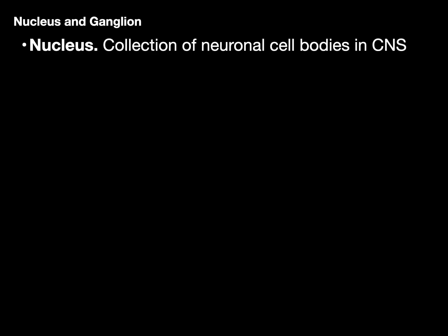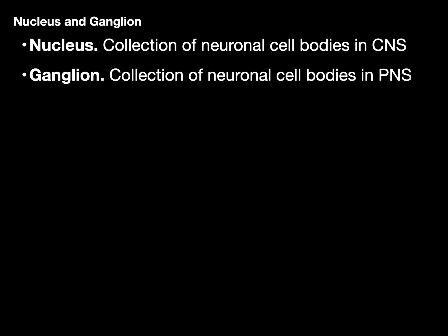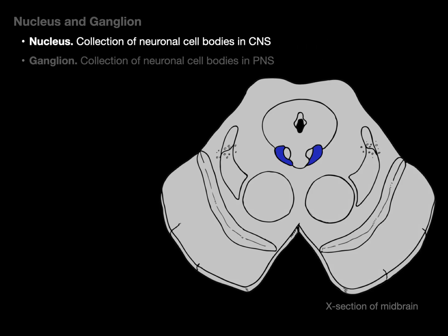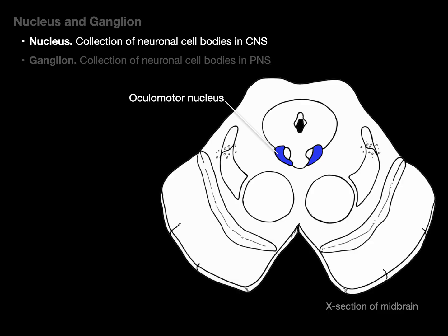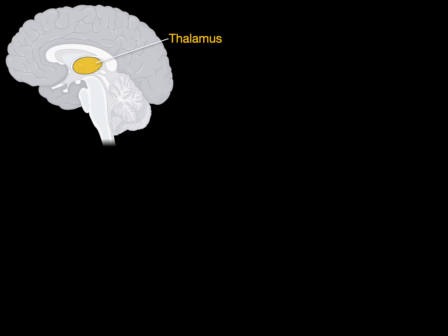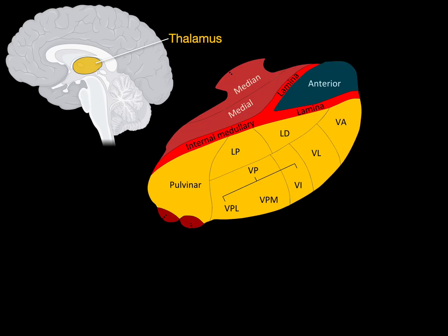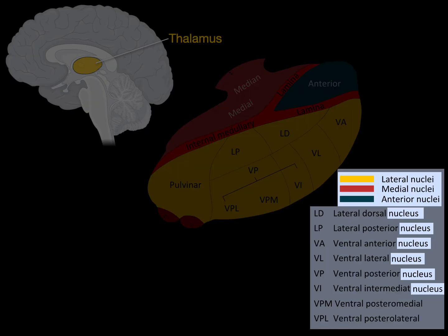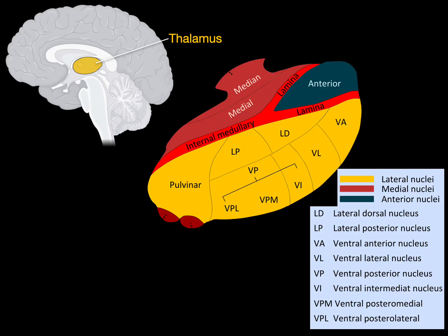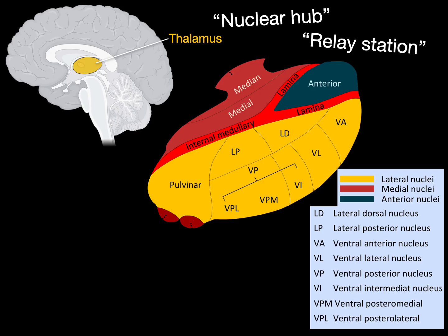What's the difference between a nucleus and a ganglion? A nucleus is a collection of neuronal cell bodies in the central nervous system. For example, the oculomotor nucleus contains somatic motor cell bodies that give rise to axons innervating eye muscles. Another example is the thalamus — when you blow it up, you see all those labeled regions are nuclei, collections of cell bodies. That's why the thalamus is nicknamed the nuclear hub, relay station, or grand central station — because it contains so many nuclei.